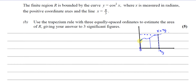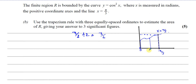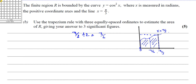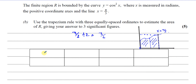To use the trapezium rule, it helps to have a table. I need a table with X and Y values — where Y equals cosine squared x. My X values are going to be zero, pi over six, and pi over three. That's the table I need.